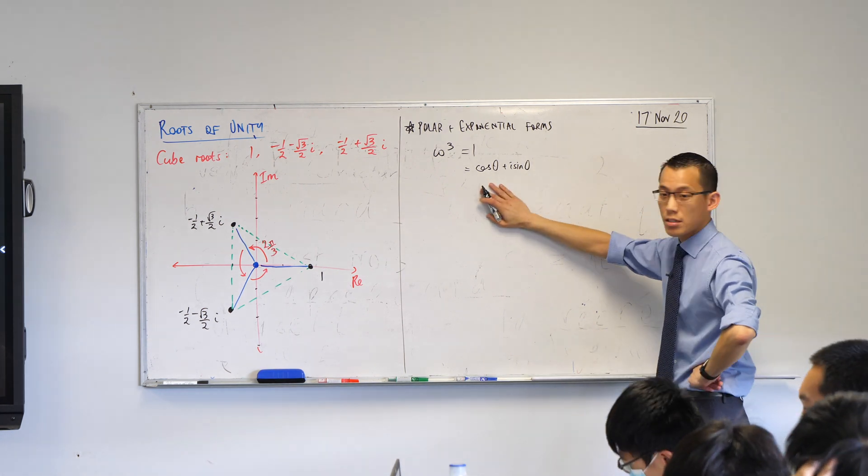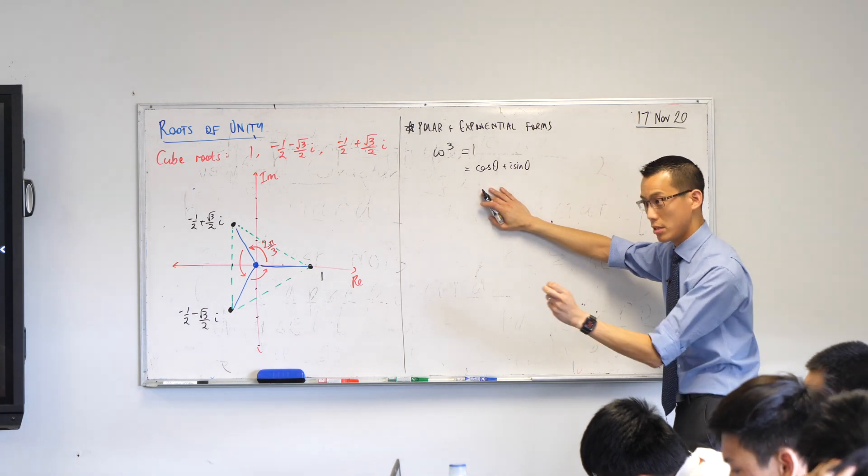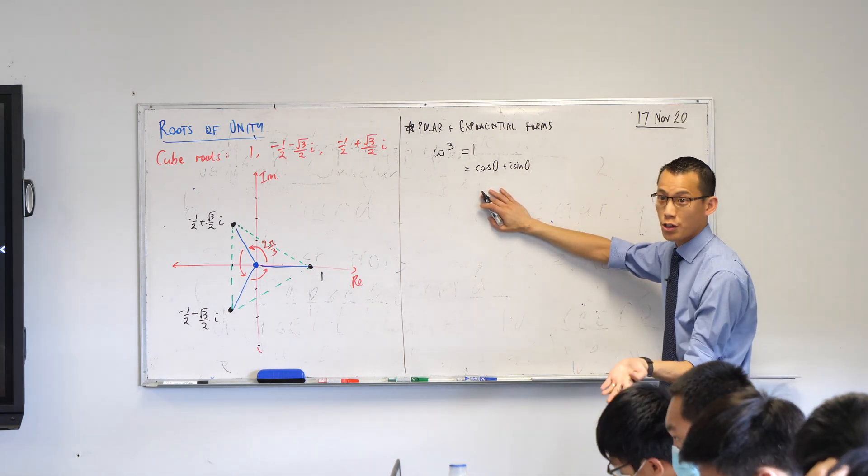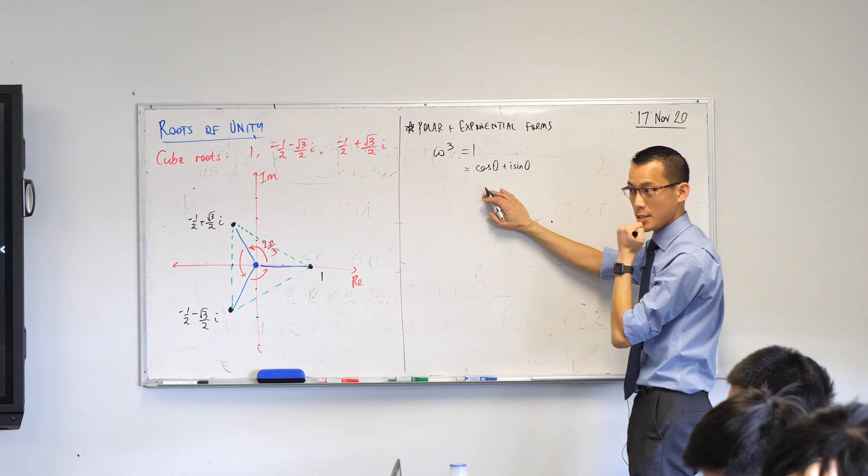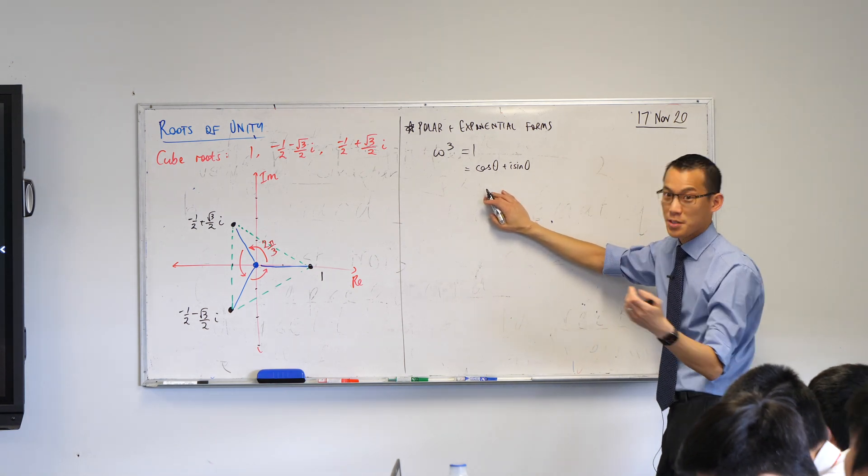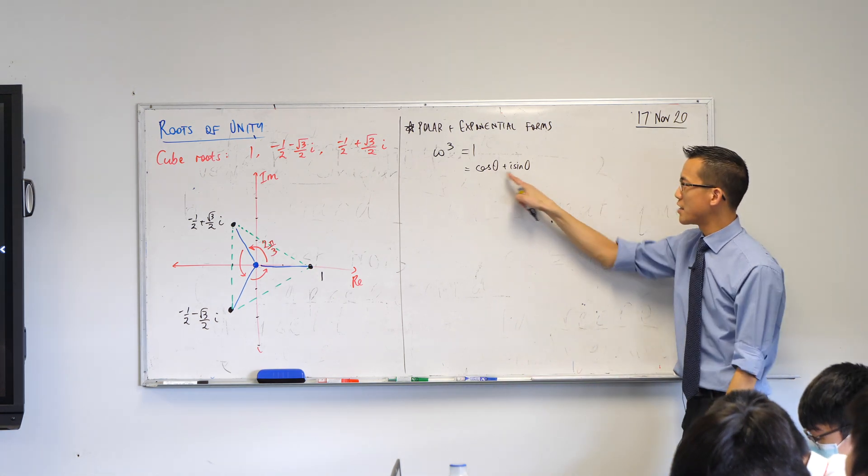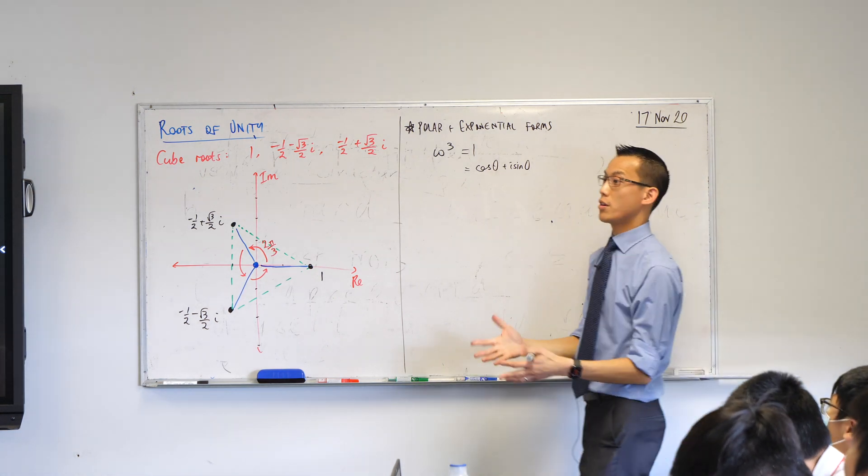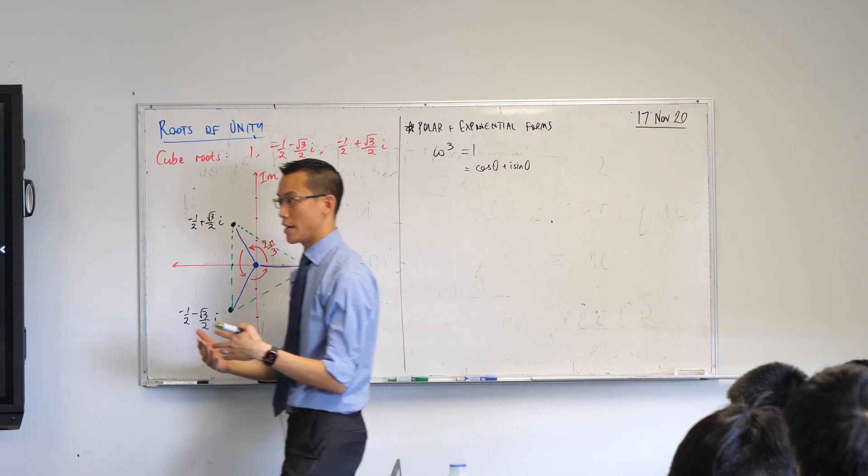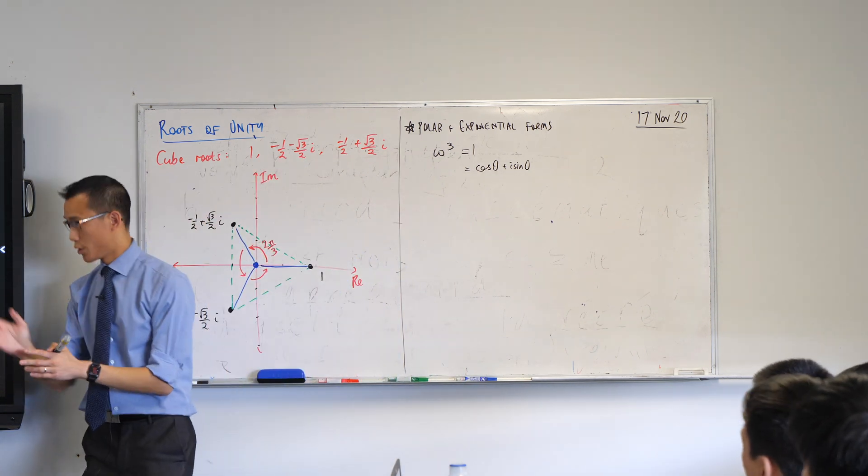So far so good? Okay, now this is the way we would say 1 with a principal argument. This is the smallest angle you can use to define where this is. But we know the principal argument is not the only argument. There are many others, infinitely many. And so I just want to remind you that cos and sine are periodic functions. They repeat every how often? 2 pi radians.